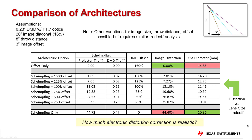Here we show an example trade-off analysis to show the relationship between image distortion and lens size depending on the projection lens architecture. We assume a 0.23 inch diagonal DMD with f/1.7 optics, a 20 inch image diagonal at an 8 inch throw distance with 3 inch image offset. Looking at the table, we can see that using DMD offset only, which equates to 160% offset for these specifications, 0% distortion can be achieved with a projection lens of 14.85 millimeters in diameter.